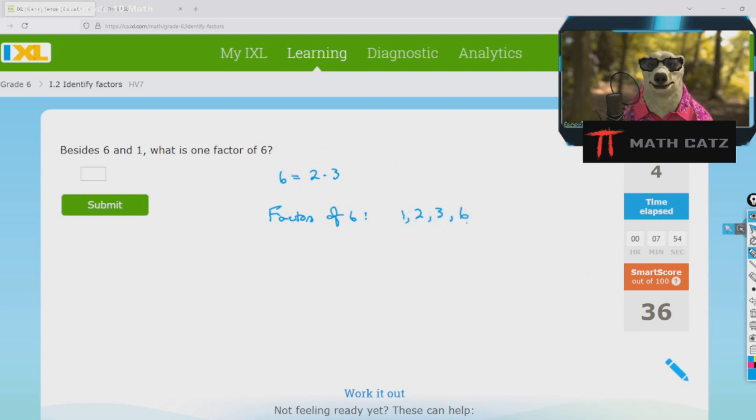So one, two, three, and six are all factors of six. Pick your favorite one, maybe a two, and there you go.